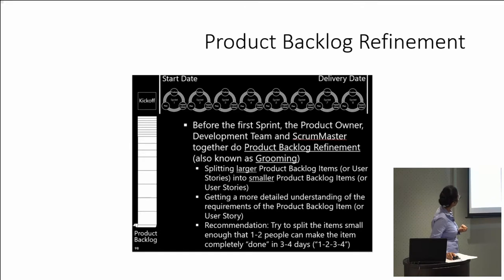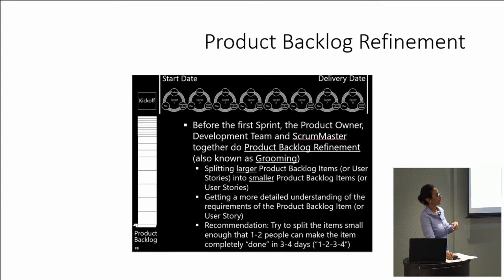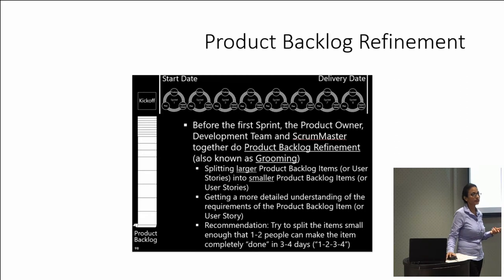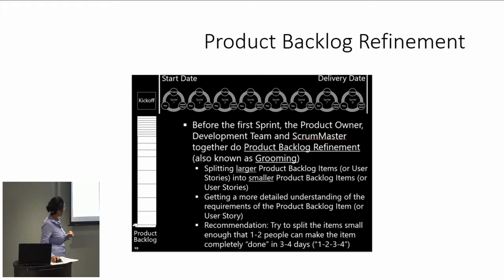Starting with product backlog refinement: before the first sprint, the product owner, development team, and scrum master together do product backlog refinement — slicing bigger items into smaller ones. Those bigger items can be larger user stories or epics. As the team slices through, they get a more detailed understanding of the requirements. The general recommendation is to split items small enough that one to two people can complete the item in three to four days.